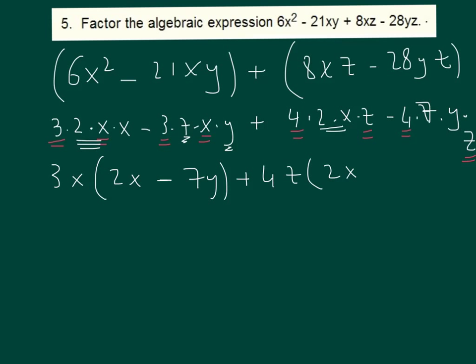The common factor left, two X here and minus seven Y in the other side. We now have a common factor which is two X minus seven Y.